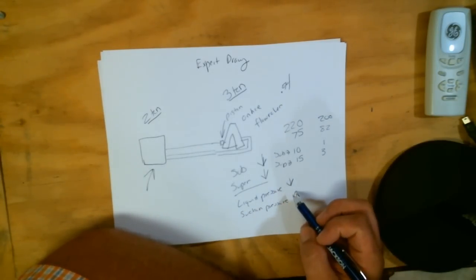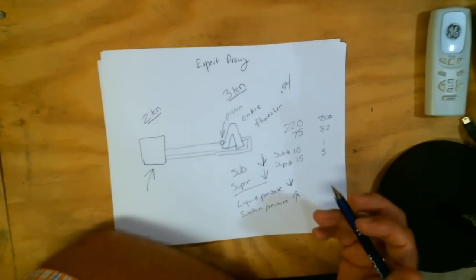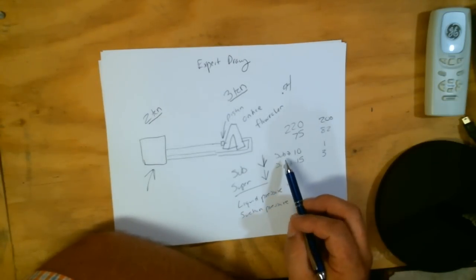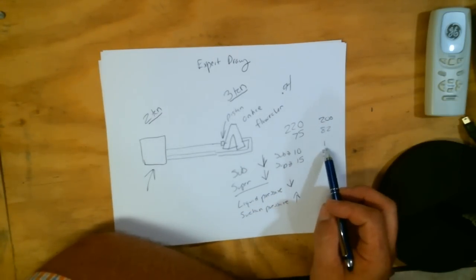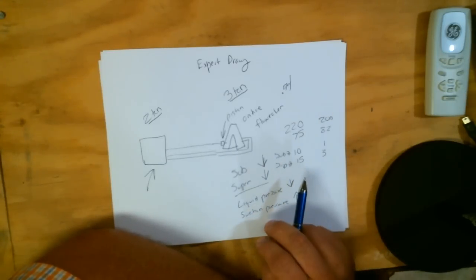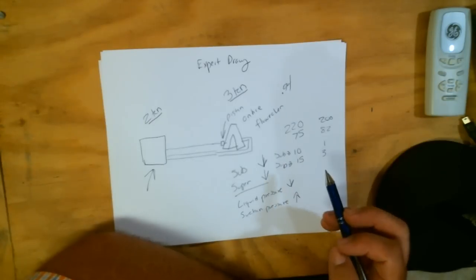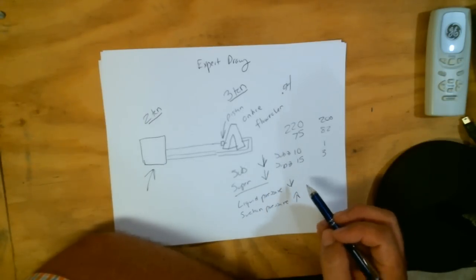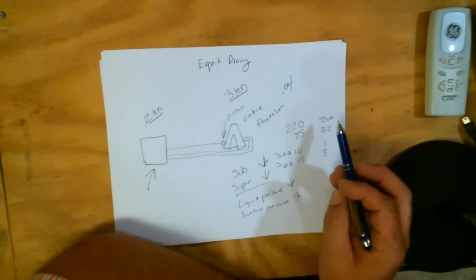Say you go out there and all of a sudden you have 200 over 82 with a sub-cooling of 1 and a superheat of 3. Normally if you have a very low superheat you'll say oh it's overcharged. That's a symptom of being overcharged, too much refrigerant in the evaporator coil. But you come back and you see your sub-cooling is 10, it's down to 1, it's supposed to be 10, it's down to 1. You say well I need to add charge because the sub-cooling is not high enough.